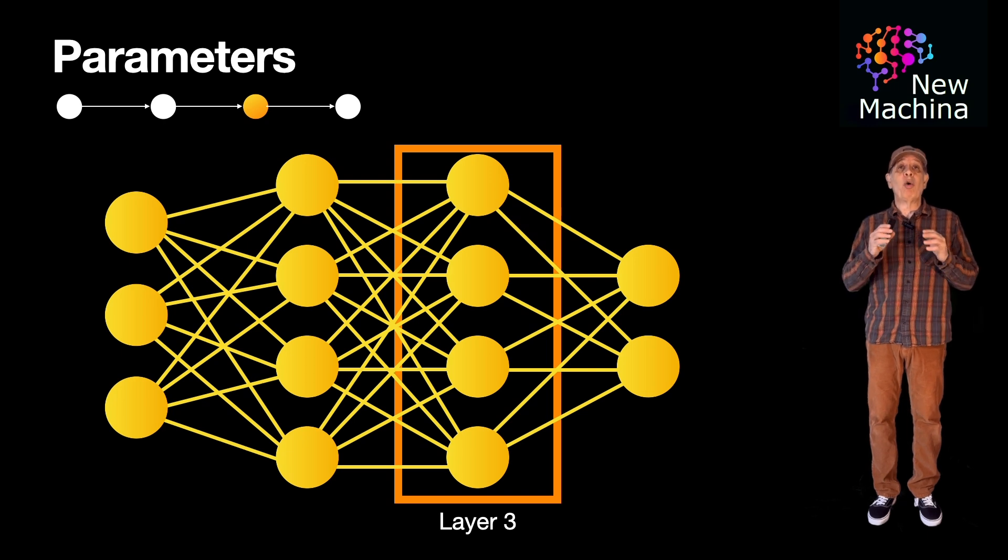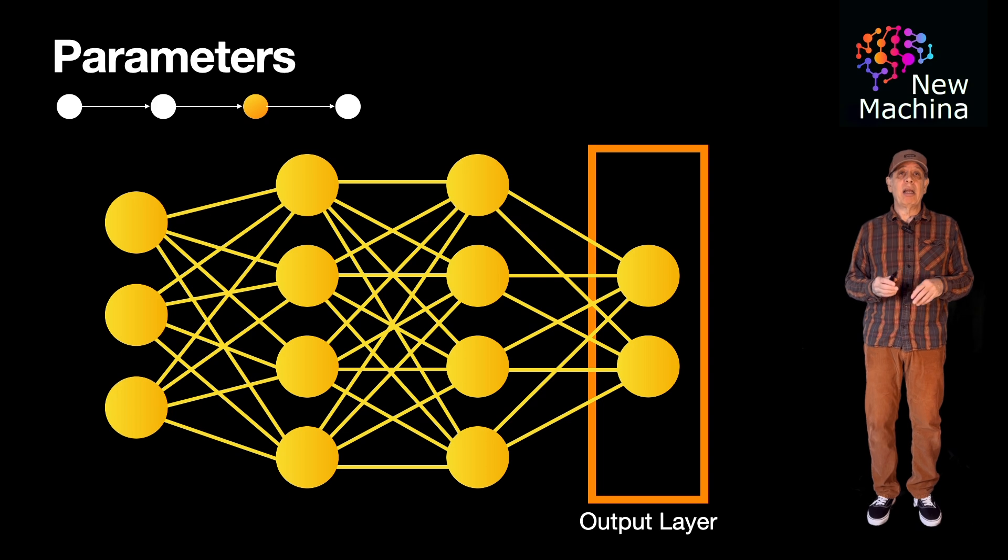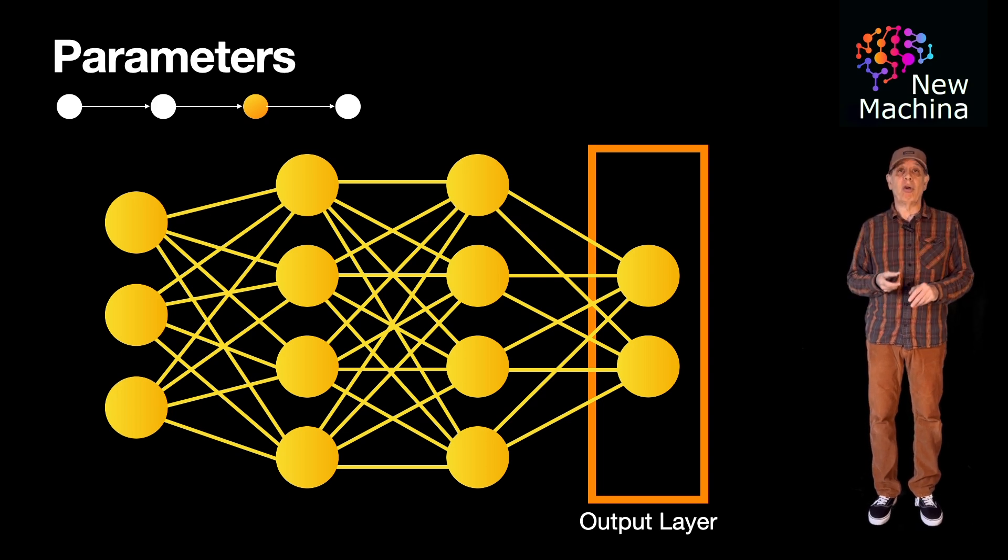Layer three, which is our second hidden layer, also has four neurons. And finally, our output layer has just two neurons.